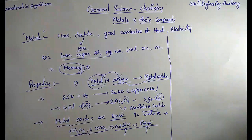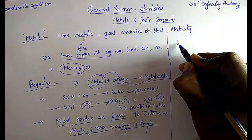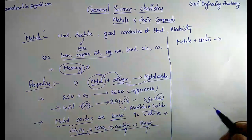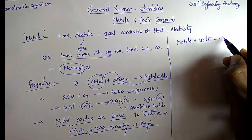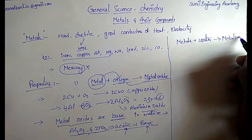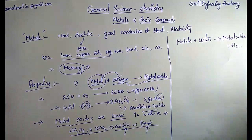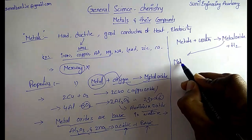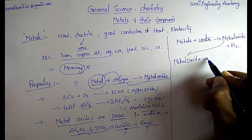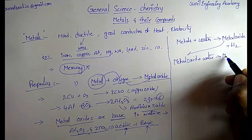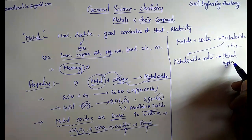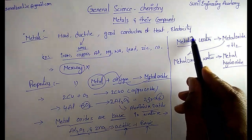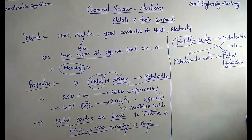The next property is the reaction with water. When metals are combined with water, metal oxide and hydrogen gas are produced. If this metal oxide again combines with water, we get metal hydroxide. So whenever metals react with water, we get metal hydroxide.